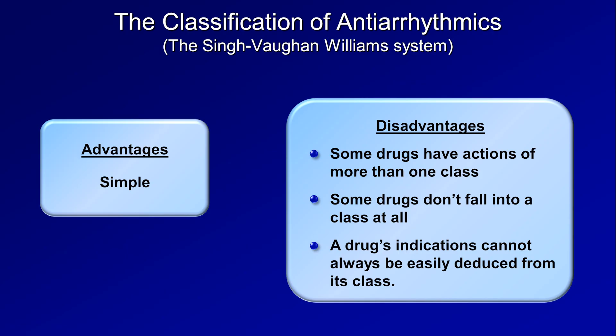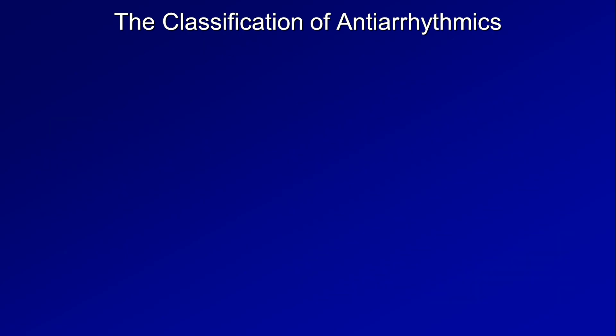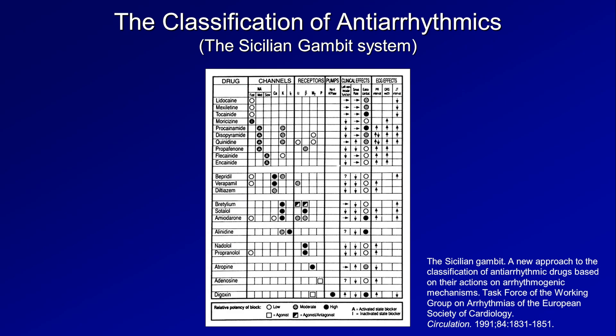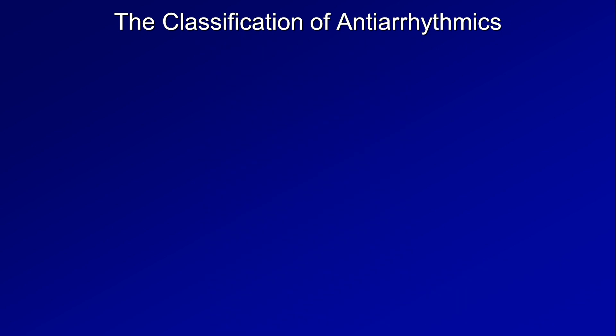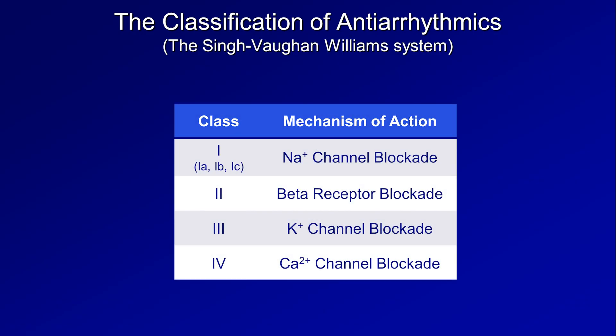Antiarrhythmics are just plain too complicated. There is one alternative out there called the Sicilian Gambit system — yes, as in the chess opening. The Sicilian Gambit tries to address the disadvantages of Singh-Von Williams, but in the process sacrifices the simplicity. So instead of four classes for four mechanisms, you have this instead. More interesting? Yes. More reflective of physiology? Yes. Easier to teach or to use in practice? A resounding no. So this series will stick with the Singh-Von Williams, which is by far the most common system used out there in practice.